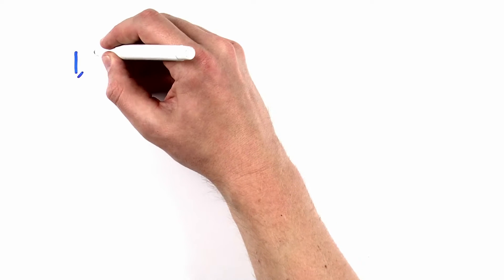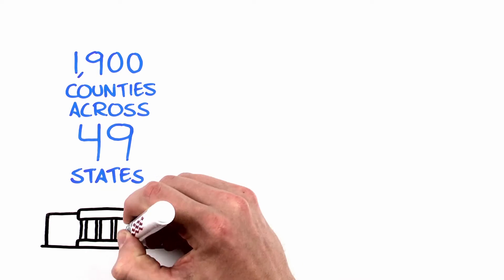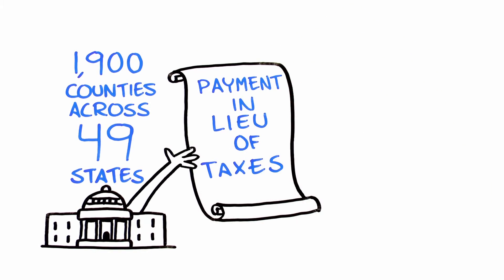To compensate the nearly 1,900 counties across 49 states that are home to federal lands, Congress created the Payments in Lieu of Taxes, or PILT, program.